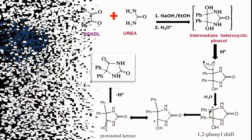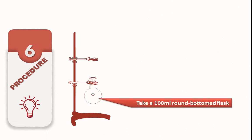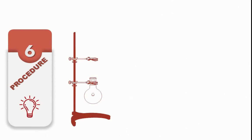Now let's see the procedure. First, take a 100 ml RBF. Then take two beakers: one beaker consists of 5.3 gram benzil, 3 gram urea, 15 ml of 30 percent aqueous NaOH solution, and another beaker consists of 15 ml ethanol.